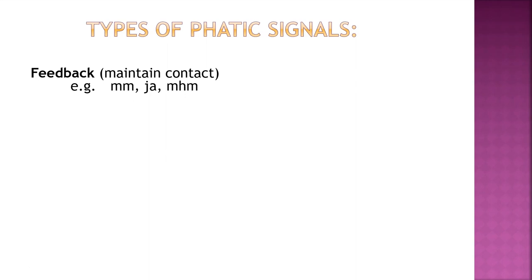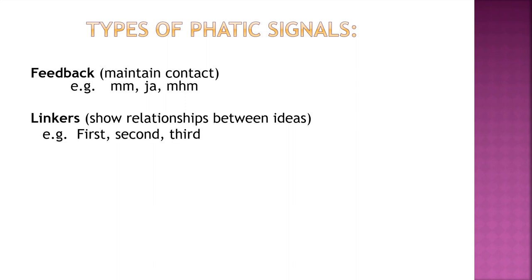Another kind of phatic signal is a linker, which shows relationships between ideas. For instance, if you're making an argument in an essay, you might say something like this. First, I intend to show X, Y, Z. Second, I will argue against A, B, C. And thirdly, I will conclude by considering P, Q, and R.